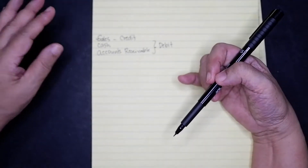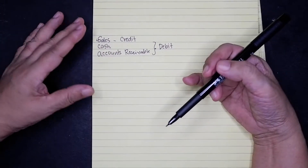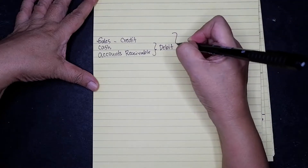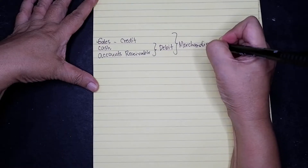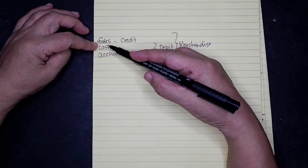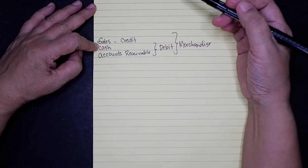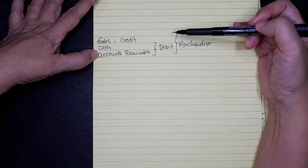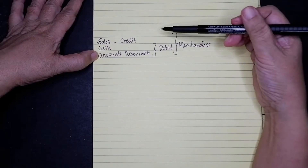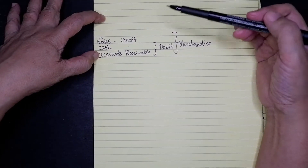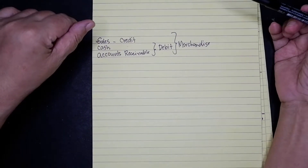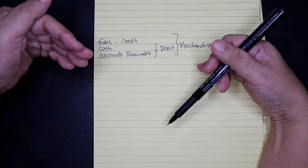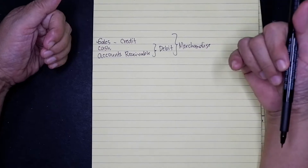How do we determine if it is a purchases or sales transaction? If there is the word 'merchandise.' If there is the word merchandise, then we use purchases and sales accounts. Example: 'purchase merchandise' means our entry is debit purchases and credit accounts payable. 'Sold merchandise' means debit cash and credit sales. If it is 'purchase office supplies,' the entry is debit office supplies and credit accounts payable or cash. 'Purchase office furnitures' means debit office furnitures and credit accounts payable.